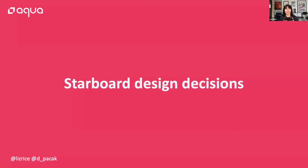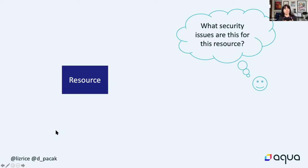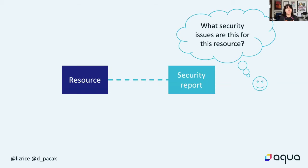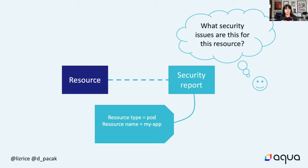Now you've seen Starboard in action. Let's talk about some of the design decisions we've taken while building it. Security report information is created and associated with particular resources. We're trying to generalize handling different types of security report associated with different types of resources. We use labels on the security-related resource to identify which Kubernetes resource it relates to, so we can use label selectors to extract the right security information. We're also using an owner reference - when the owning resource gets deleted, the associated security resource also gets deleted. We simply don't have to worry about garbage collection because Kubernetes takes care of it for us.